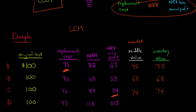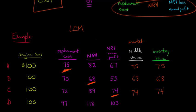So in situation B it was the NRV itself, and in situation A it was the replacement cost. It could be any of those three in any situation — we're always going to take the value that's in the middle.